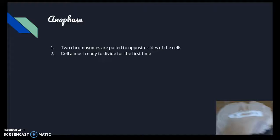Anaphase one: two chromosomes are pulled to opposite sides of the cells. These chromosome pairs stay together though. Two cells are almost ready to divide for the first time.